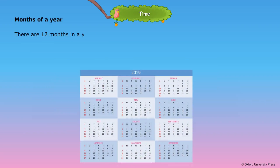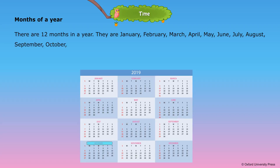Months of a year. There are 12 months in a year. They are January, February, March, April, May, June, July, August, September, October, November and December.